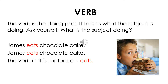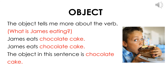Secondly, we have the verb. Remember that a verb is a doing word — it is something that you can do, or an action that you can perform. It tells us what the subject is doing. Ask yourself: what is the subject doing? In 'James eats chocolate cake,' James eats — so the verb is eats.